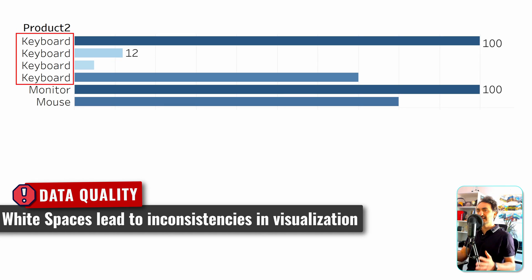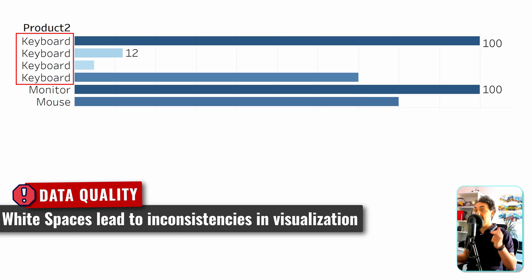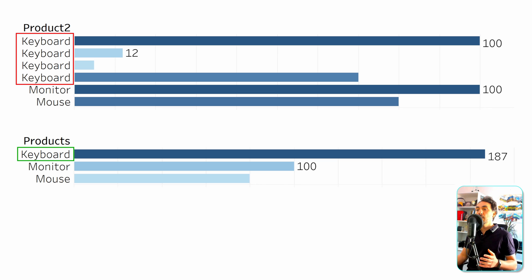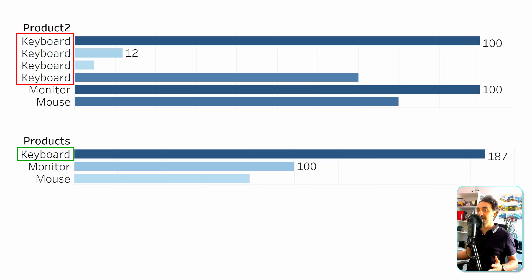To clean up the data and remove those dirty spaces, we can use one of the three functions: LTRIM, RTRIM, or TRIM. If we apply those functions on the product name, we'll get only three products and everything will be correct.